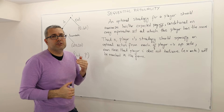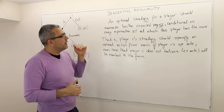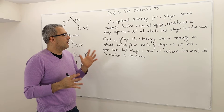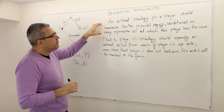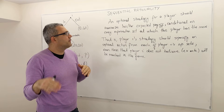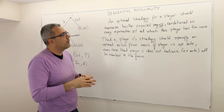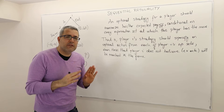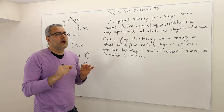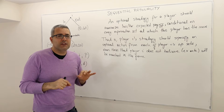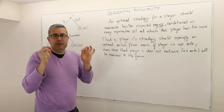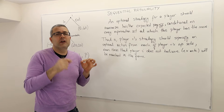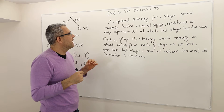So what is sequential rationality? It means the following. An optimal strategy for a player should maximize his or her expected payoff conditional on every information set at which this player has the move. So whenever a player has a decision node in the game, his strategy should prescribe an optimal strategy — meaning a strategy that maximizes his expected payoff in that part of the game.